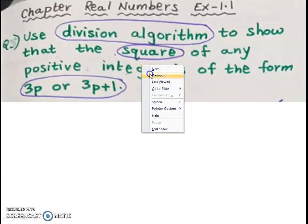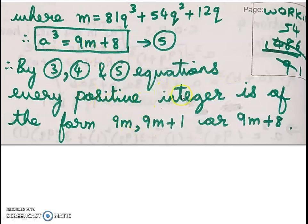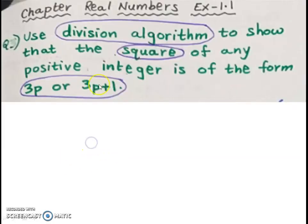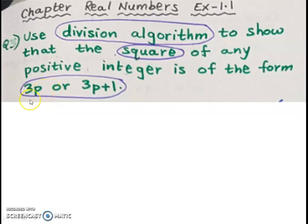From all three equations, every positive integer's cube is of the form 9m, 9m + 1, or 9m + 8. The tip is: decide which remainder value to substitute based on what power is asked. For cubes: 0³ = 0 so R = 0 for the first case, 1³ = 1 so R = 1 for the second, 2³ = 8 so R = 2 for the third. Similarly for squares: 0² = 0 and 1² = 1 guided those substitutions.